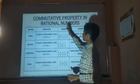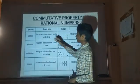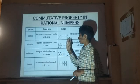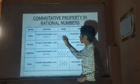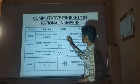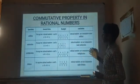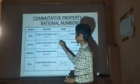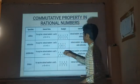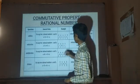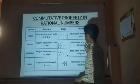Commutative Property in Ratio Numbers — Addition: for any two ratio numbers A and B, A plus B is equal to B plus A. For example, 3 by 2 plus 6 by 2 equals 6 by 2 plus 3 by 2, both equal to 9 by 2. Ratio numbers are commutative under addition. For Subtraction: A minus B is not equal to B minus A — for example, 3 by 2 minus 6 by 2 is not equal to 6 by 2 minus 3 by 2. Ratio numbers are not commutative under subtraction.